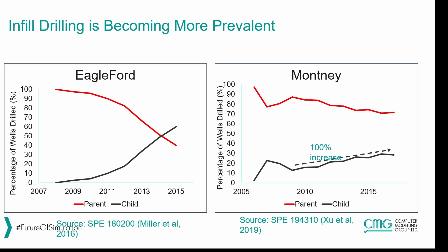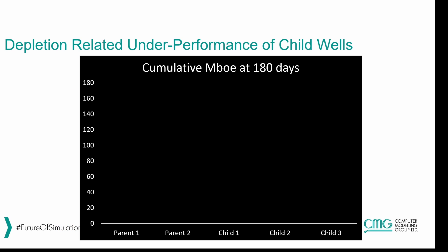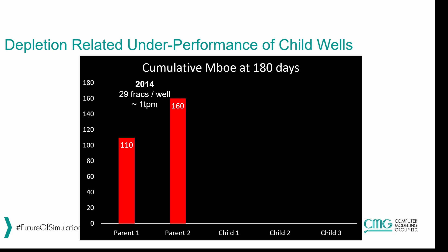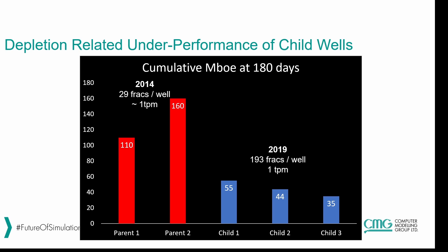Our goal is to prevent frack hits between parent and child wells in order to optimize production from all wells. Understanding frack hits is important because it can lead to reduced production potential for both. For example, two parent wells drilled in 2014 had 29 fractures per well with a certain oil production at 180 days. Child wells drilled in 2019 had 193 fractures per well, yet the child well production was significantly lower than the parent well production. The question is: how can we ensure child well production is in the same range as parent well production?